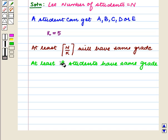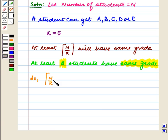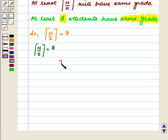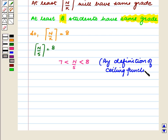We are given that at least 8 students have the same grade. So, the smallest integer greater than or equal to n by k equals 8. That is, the ceiling of n by 5 equals 8. So we have n by 5 lies between 7 and 8. This is by the definition of the ceiling function, or the smallest integer function.